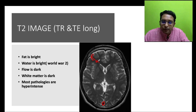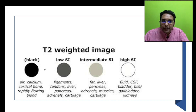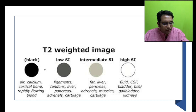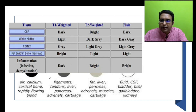T2-weighted darker signals include air, calcium, cortical bone, and rapidly flowing blood. That is why in pneumocephalus (air within the brain), you see the Mount Fuji sign. Hyperintense signals include CSF, which is more white in T2. There is a useful table comparing CSF, white matter, and cortex signal intensities to help you understand each sequence. You can now differentiate T1 and T2: check if CSF is dark or bright, look at grey and white matter contrast, and check for flow voids.